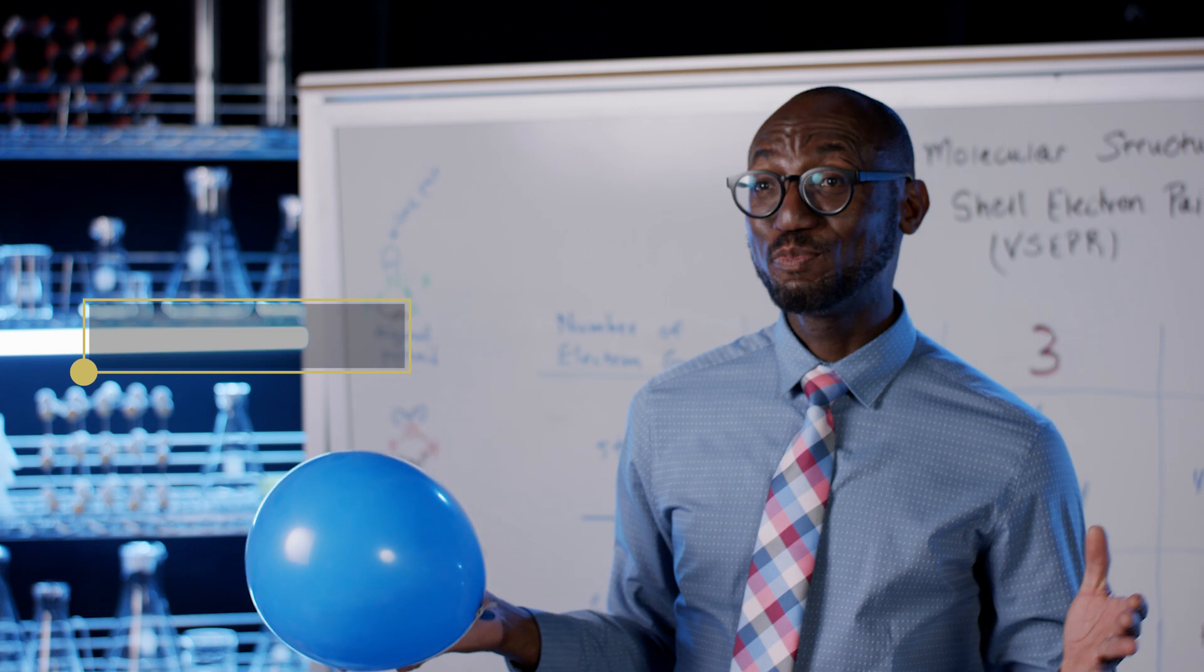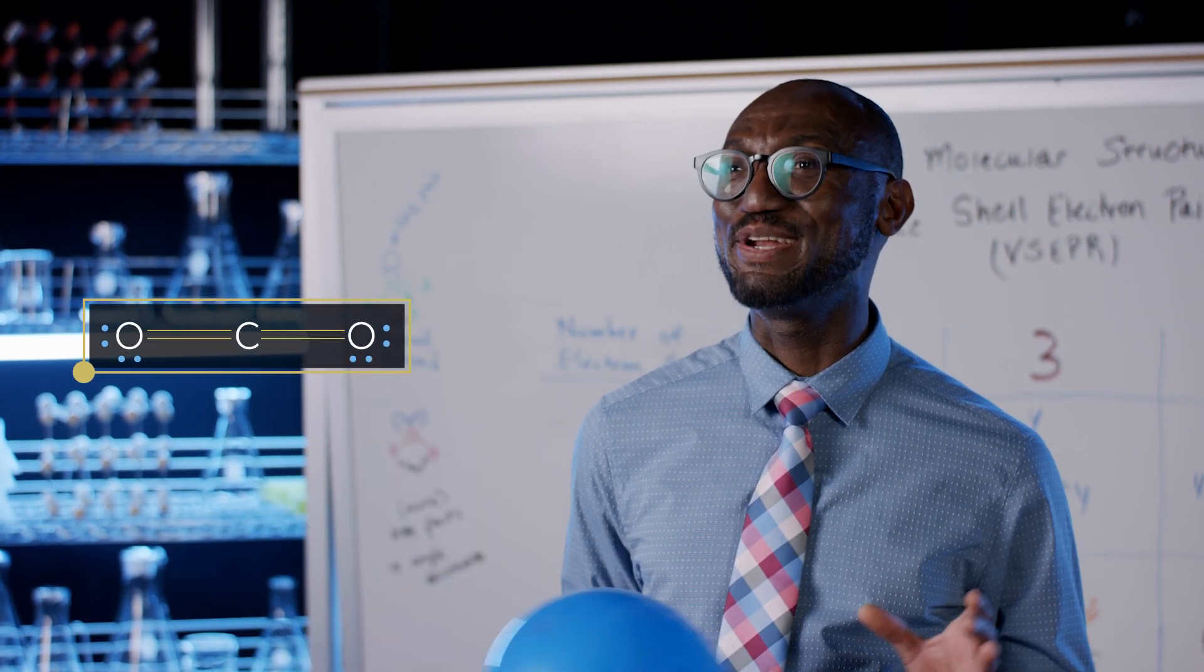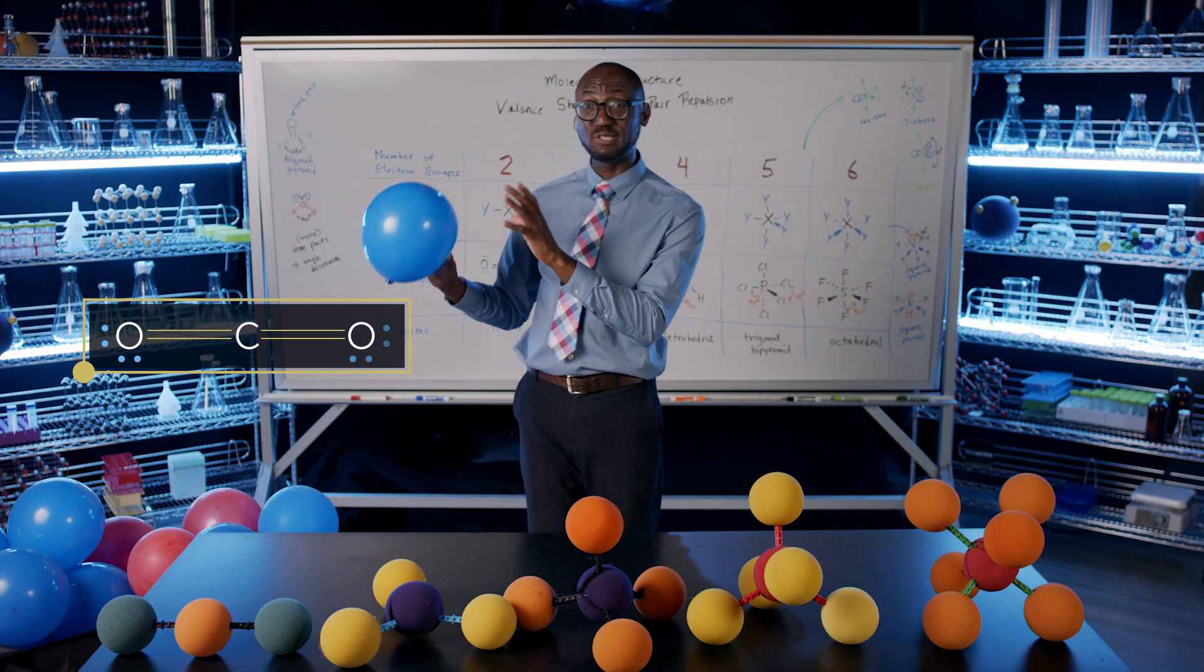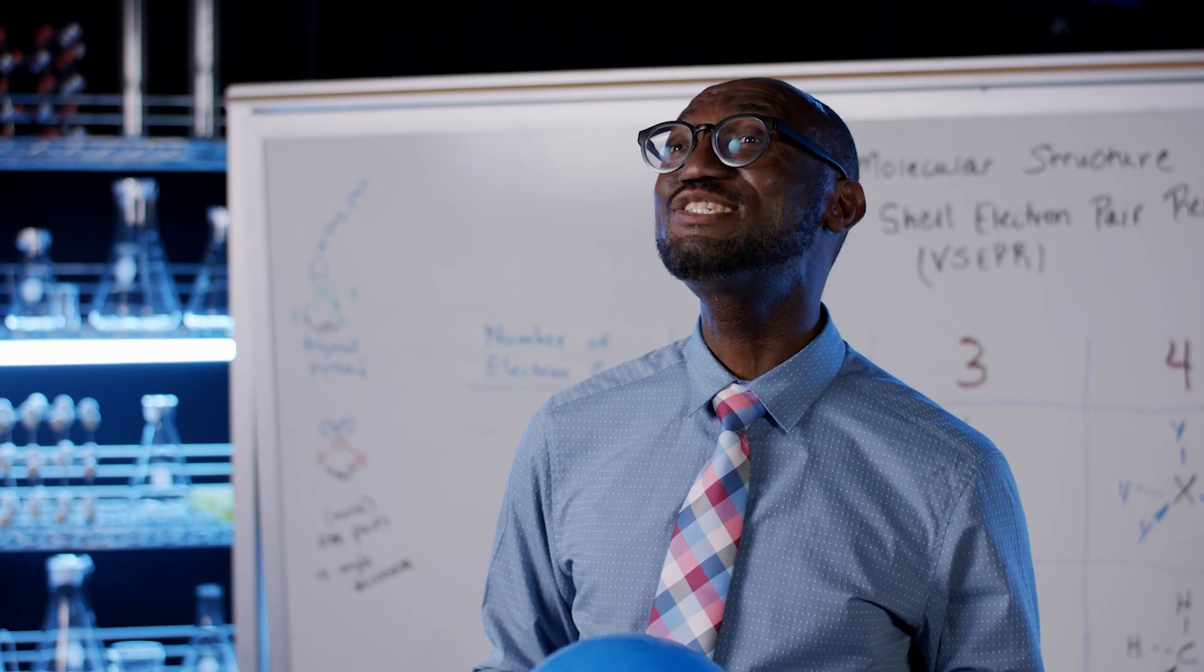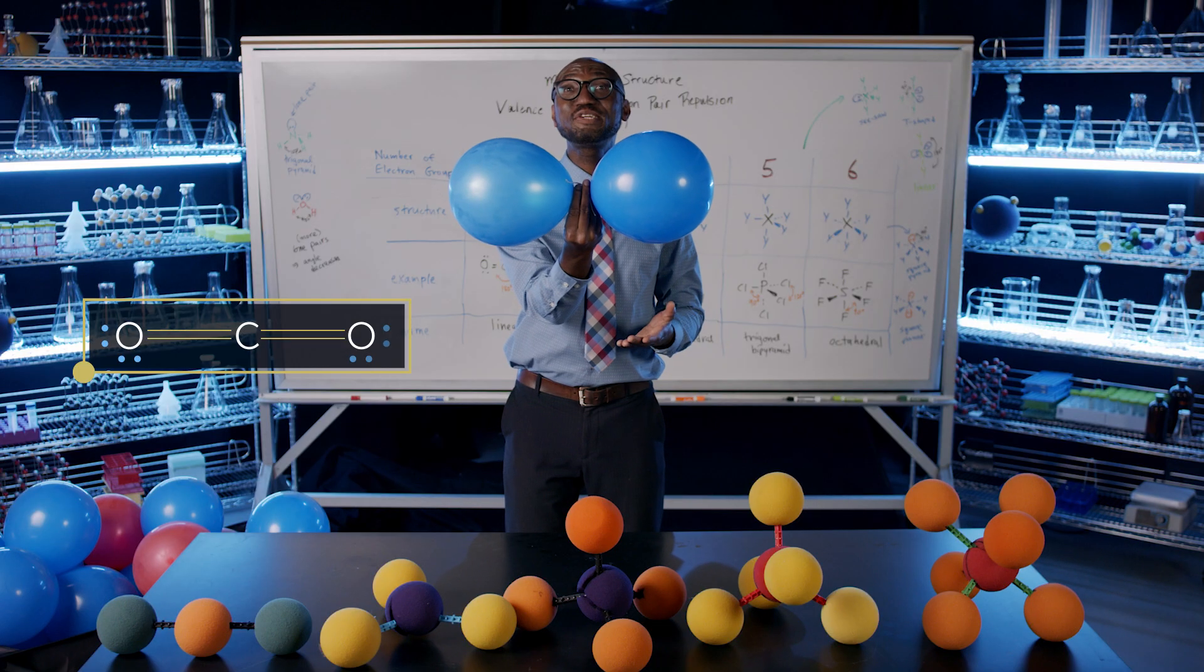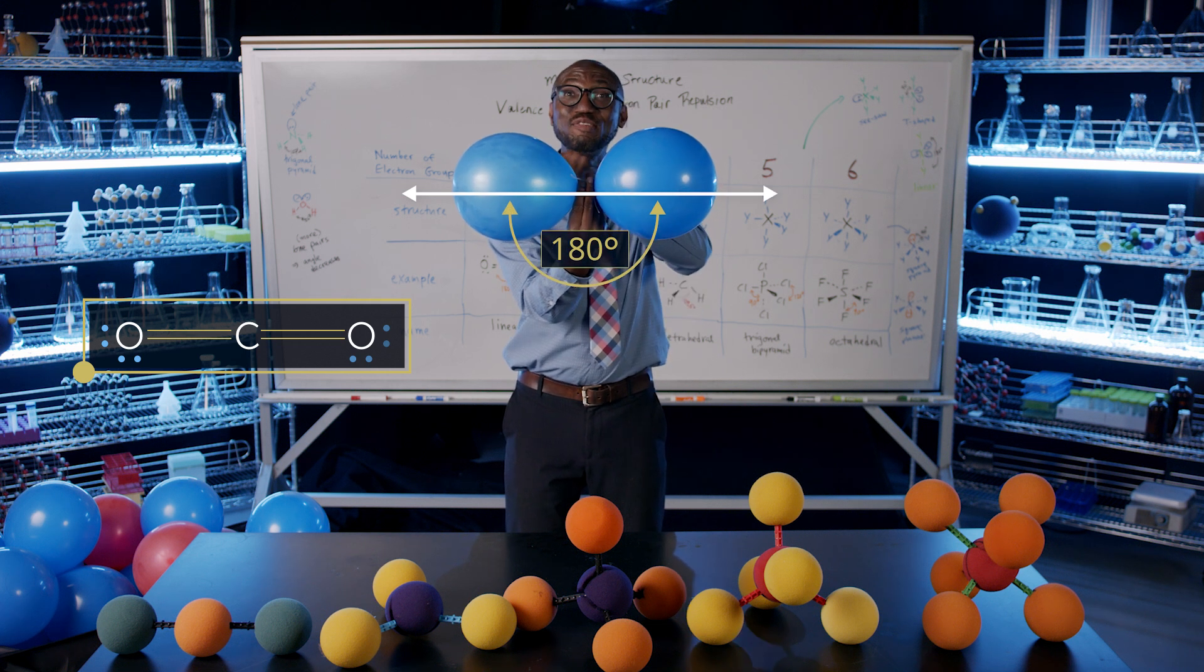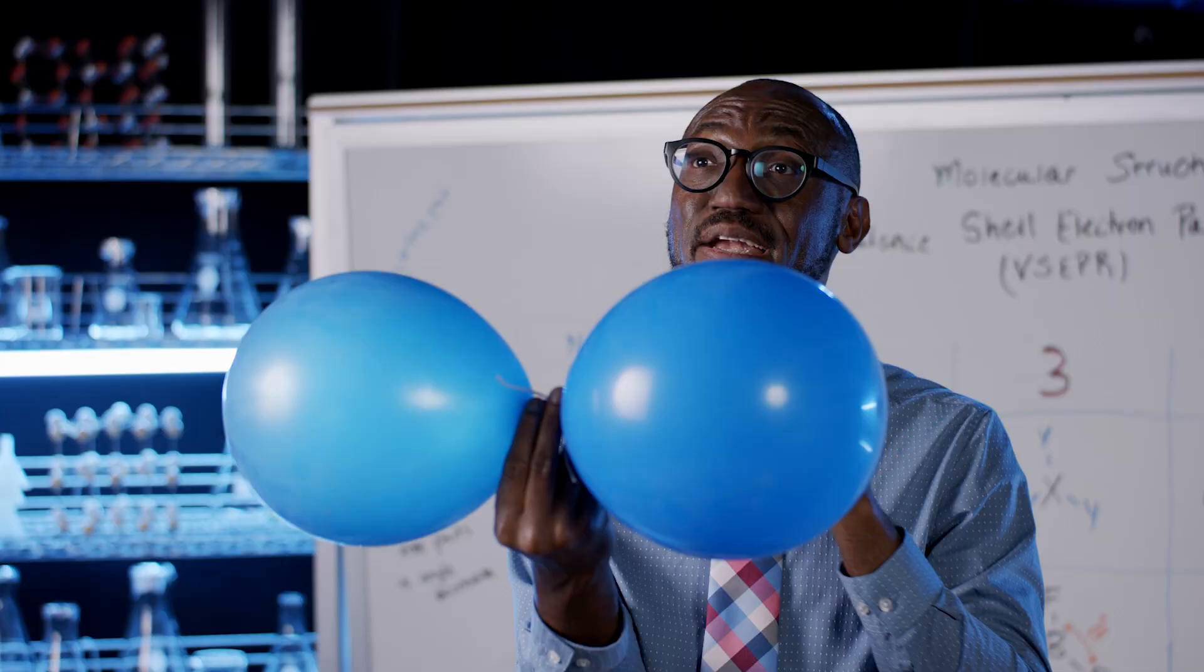Let's start simple. Two electron groups around a central atom, something like carbon dioxide, CO2. The electron groups will most likely be on opposite sides of the central atom, as far apart as possible. Let's tie these two balloons together to imitate the two electron groups. You can see that they are at 180 degrees to each other. This is a straight line, so we call this a linear molecule.